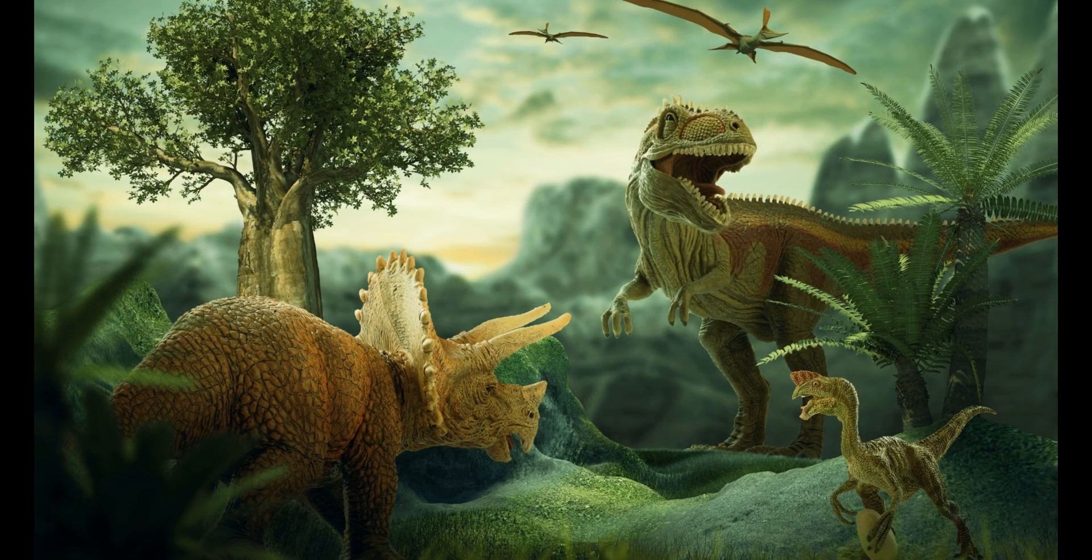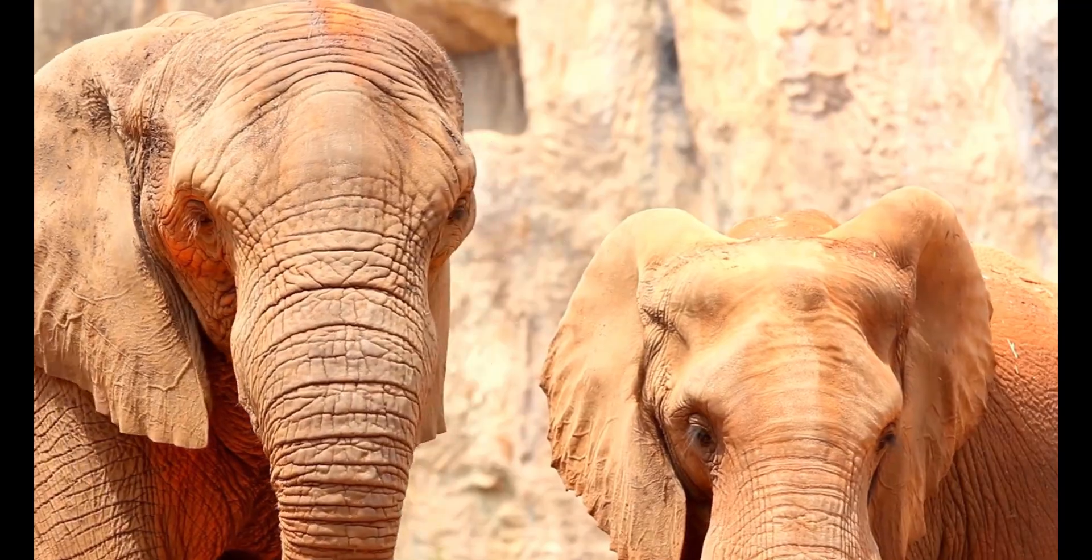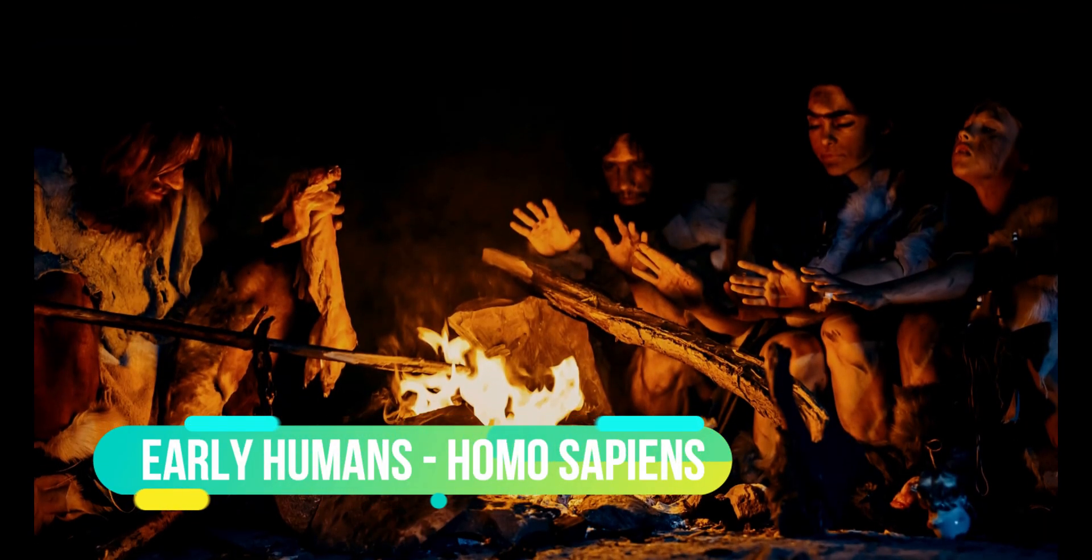The dinosaurs ruled and then died. Then mammals came into power. Last but not least, the earliest human-like creatures, Homo sapiens, evolved.